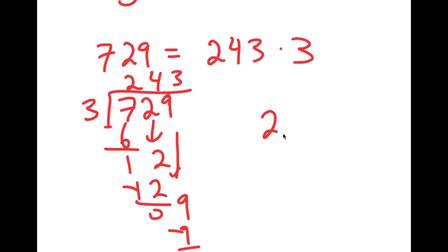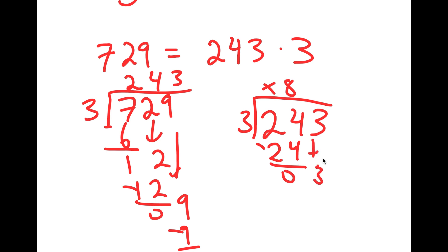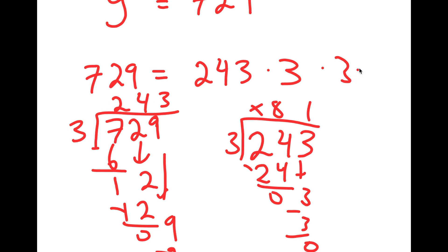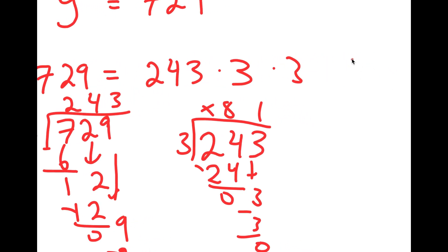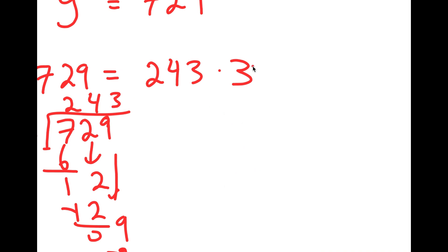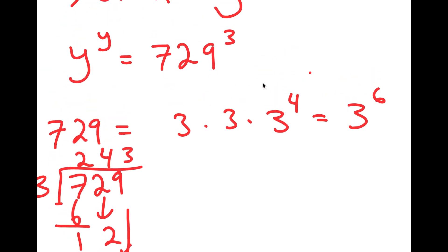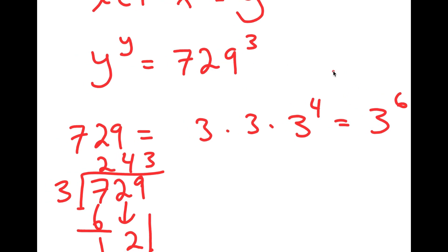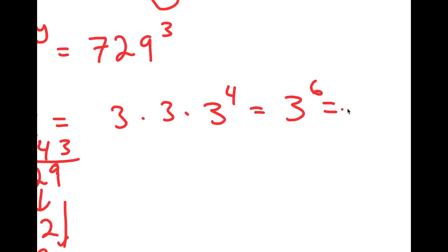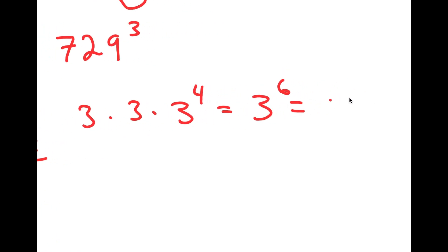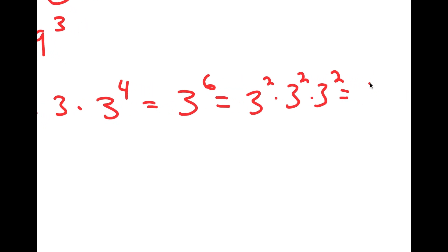Now 243, if I divide this by 3, I get 81. So I have 3 times 3 times 81, and 81 is the same thing as 3 to the power of 4. So I have 3 times 3 times 3 to the power of 4, which is equal to 3 to the power of 6. Meaning 729 is the same thing as 3 to the power of 6. And 3 to the power of 6 I can break down into 3 squared times 3 squared times 3 squared, which is equal to 9 to the power of 3.